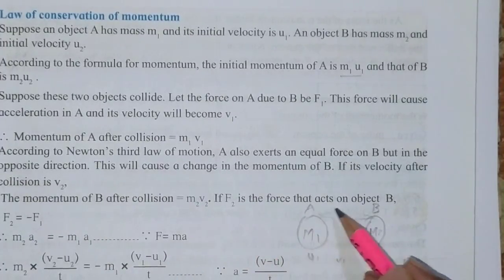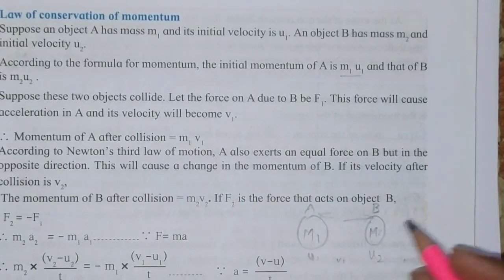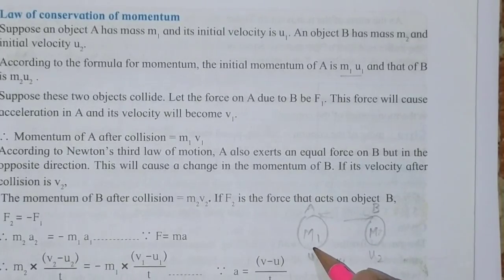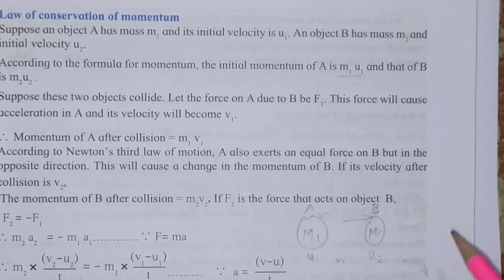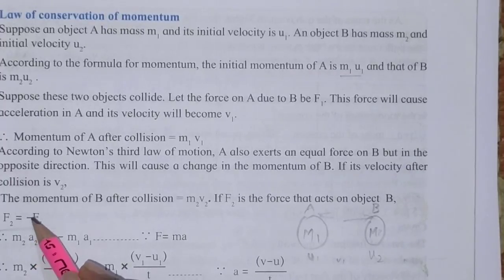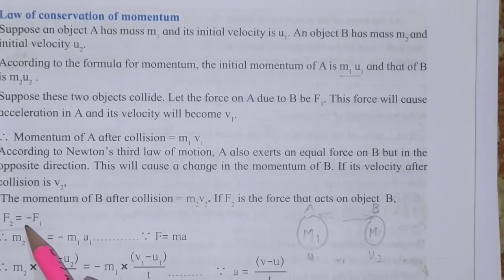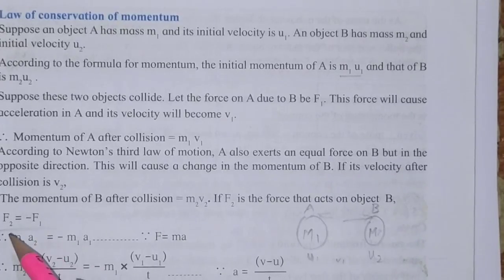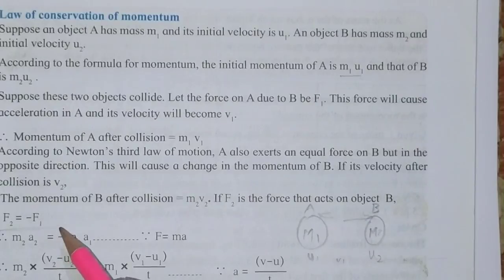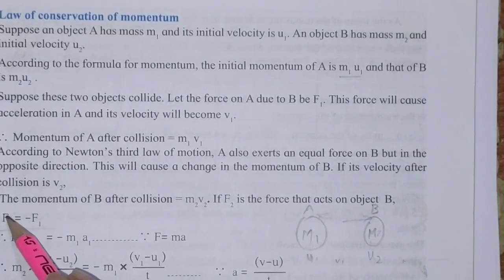If F2 is the force acting on object B, then F2 is equal to minus F1. Students may have confusion about why there is a minus sign here. The minus sign is because after collision, the direction of both objects changes — they go in opposite directions. So because of the opposite direction, we use a minus sign. Therefore, the total force applied gives us F2 equals minus F1.